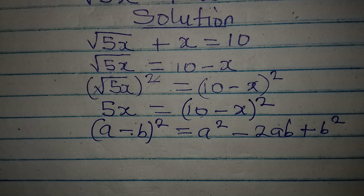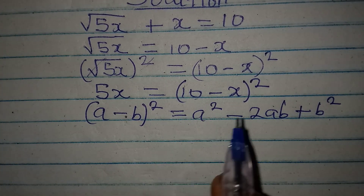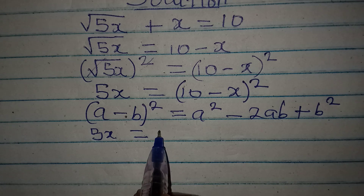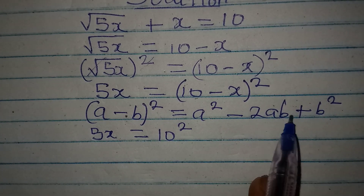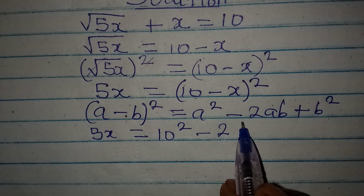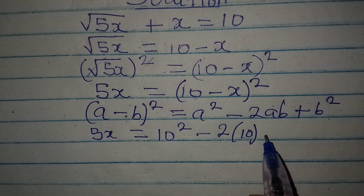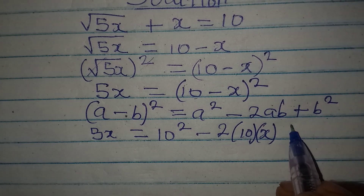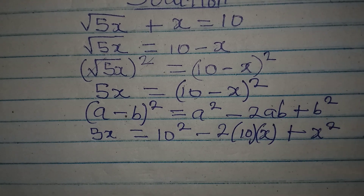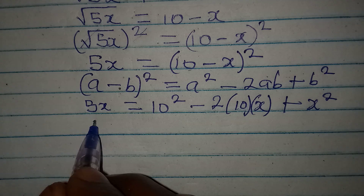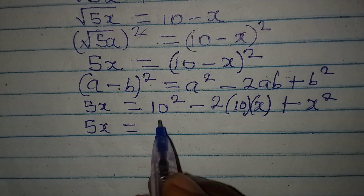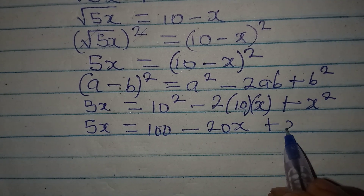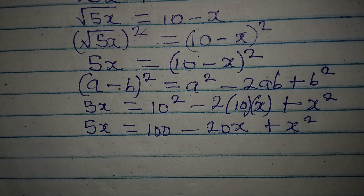I hope you can recall this. Now applying it on the right side: 5x equals a squared which becomes 10 squared, then minus 2ab which becomes 2 times 10 times x, plus x squared.